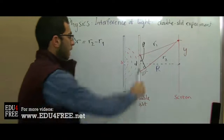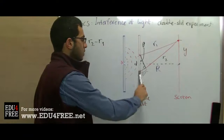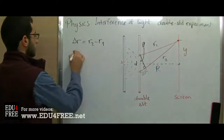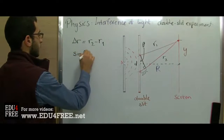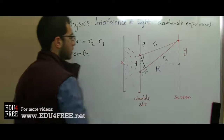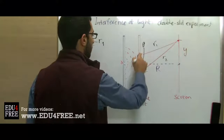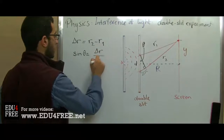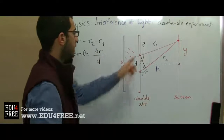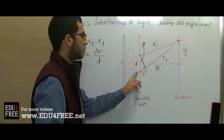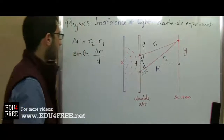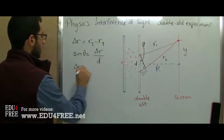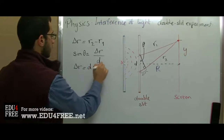In the right angle triangle, sin theta equals the opposite over the hypotenuse, which is delta r over d, where d is the distance between the two slits. So we can conclude from this that delta r equals d sin theta.